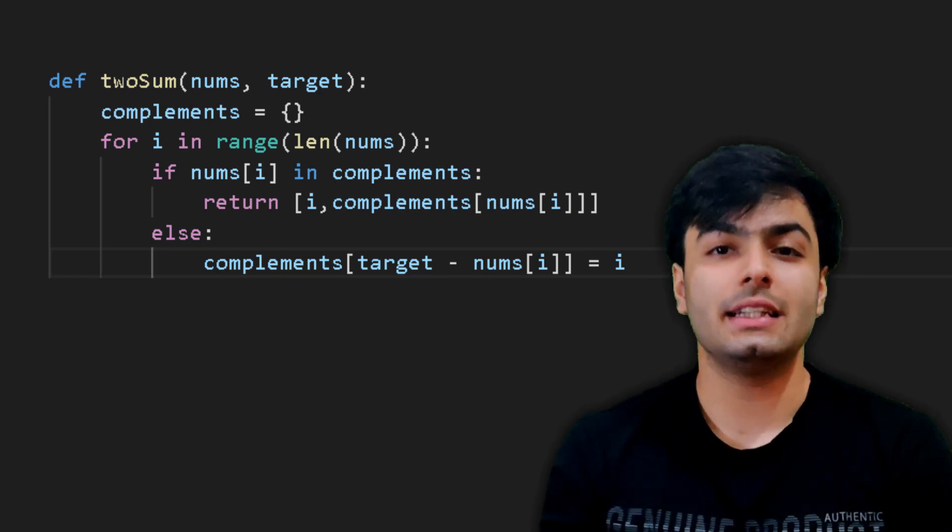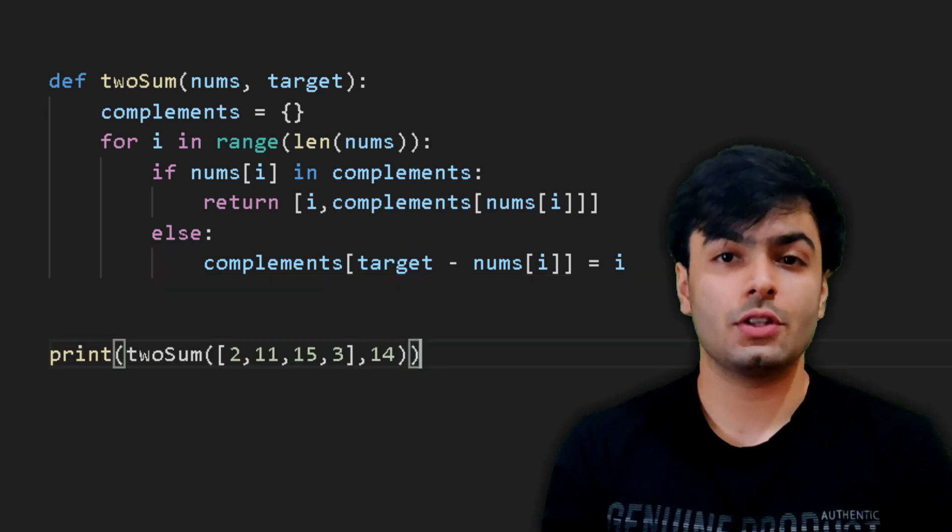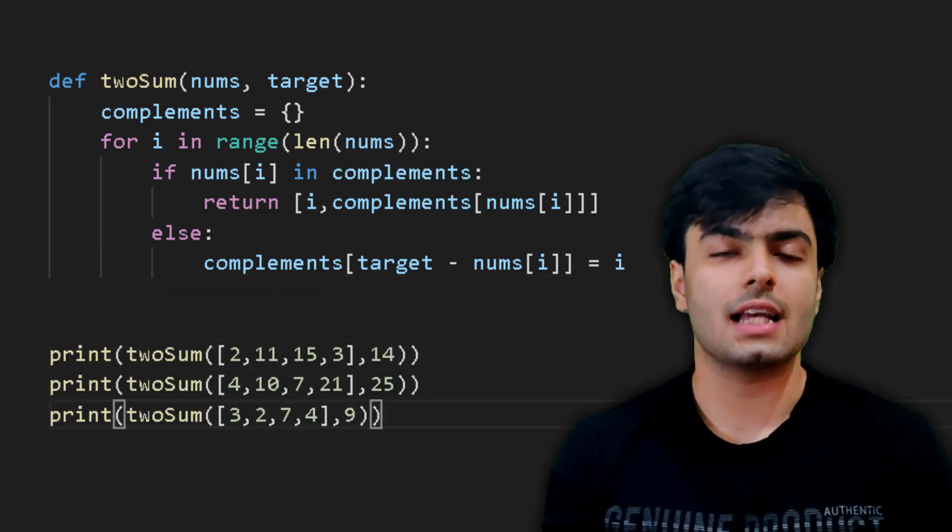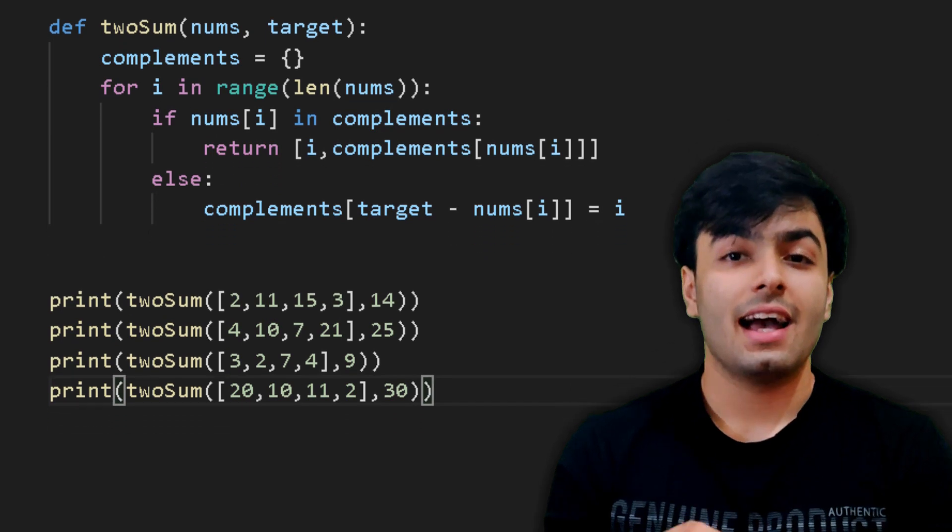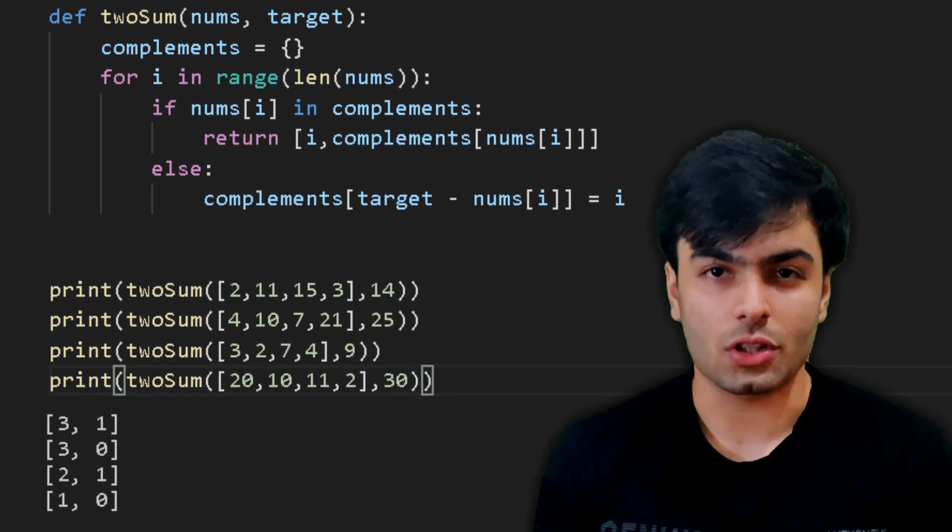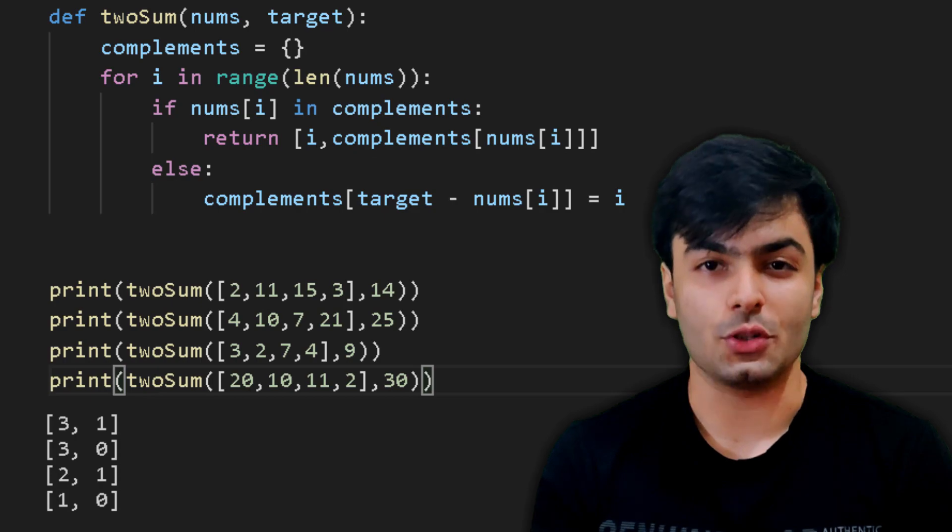And with that, we have completed our code. All that's left to do now is to test our function with different inputs and check the results. As you can see, our function works, and this brings us to the end of today's episode.